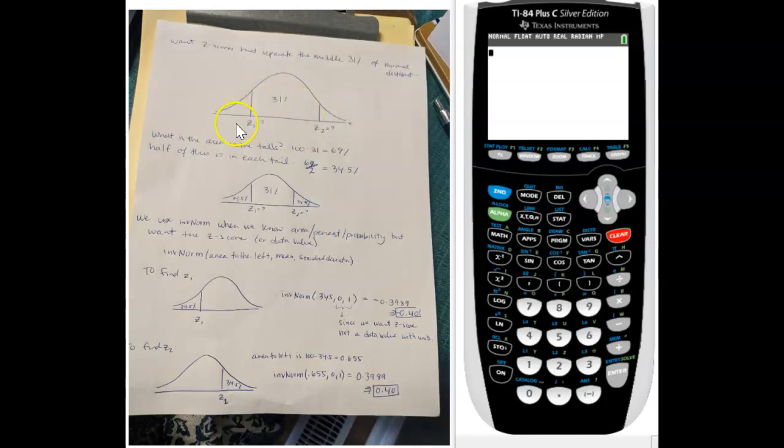Okay, so we have to go through and figure out a few things before we can answer this question and use technology. So what is the area in the tails? The whole curve has 100% of the area, and we're going to take away the 31% in the middle, so we have 69% that are in the tails. Half of this area is in each of the different tails, so we have 69 divided by 2, just 34.5%.